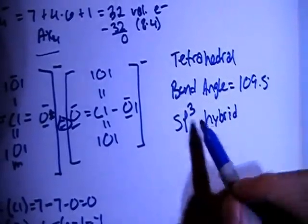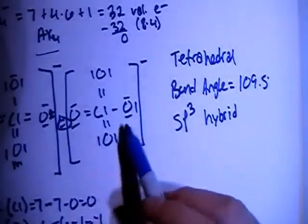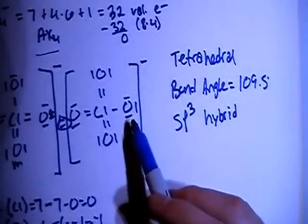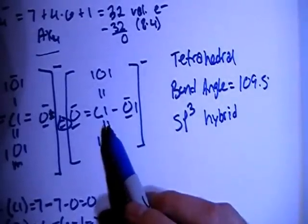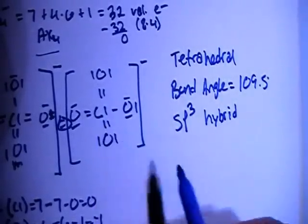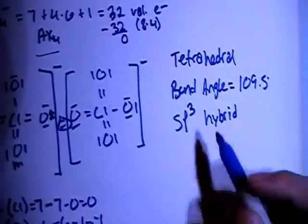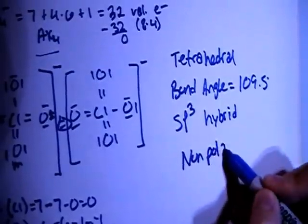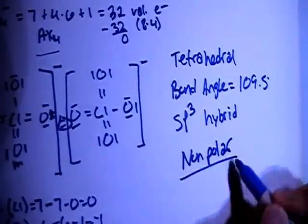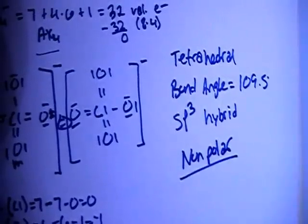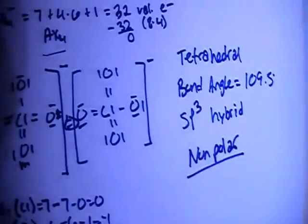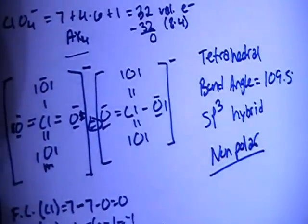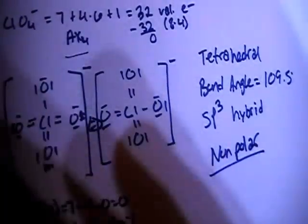Due to the fact that all oxygens are symmetrically surrounding the chlorine in the center, it's going to end up being a non-polar compound. That's pretty much it — if you have any questions, let me know, and thanks for watching.